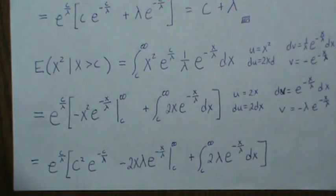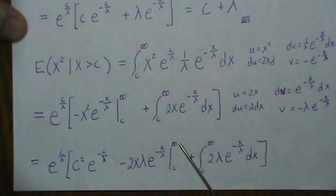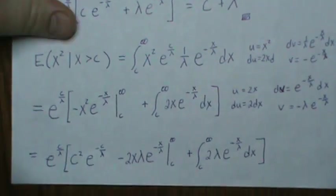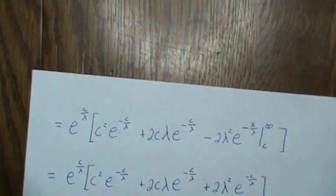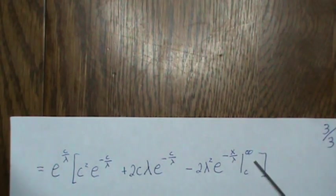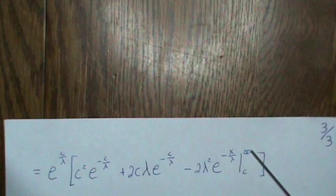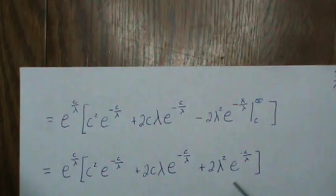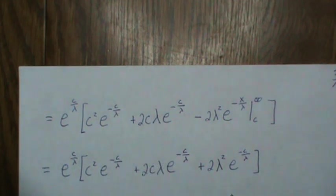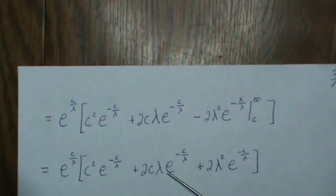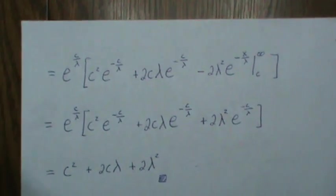So now we need to finish plugging in the limits, that goes to zero to infinity, plug in the C, we integrate that and it becomes this piece here. Then we need to plug in our limits, when we plug in infinity that goes to zero so we plug in C and we get this. Then we multiply this constant times each of those and those go away leaving C squared plus 2C lambda plus 2 lambda squared.